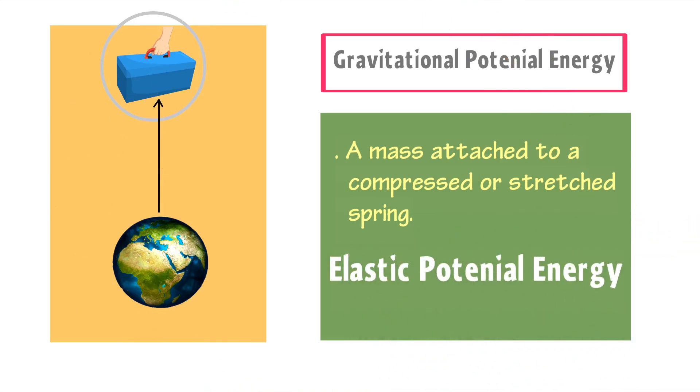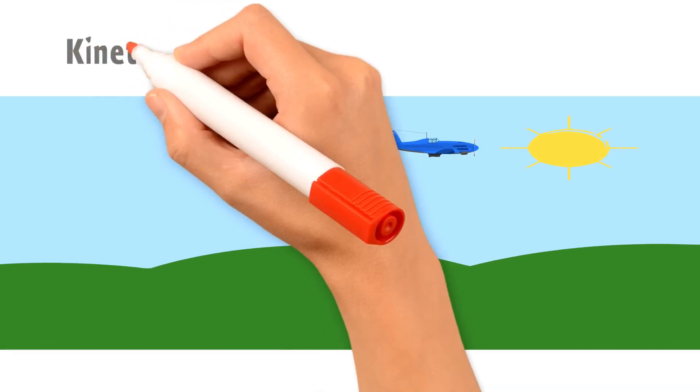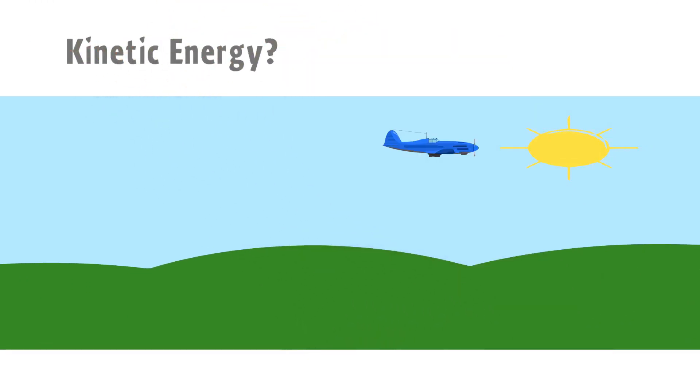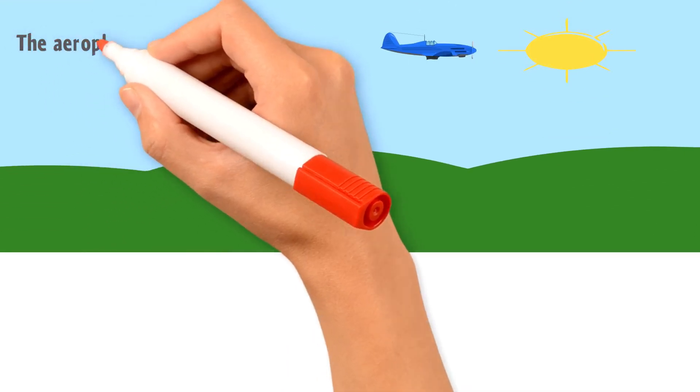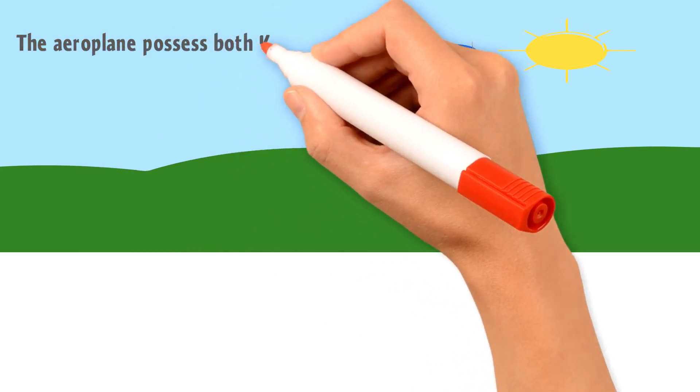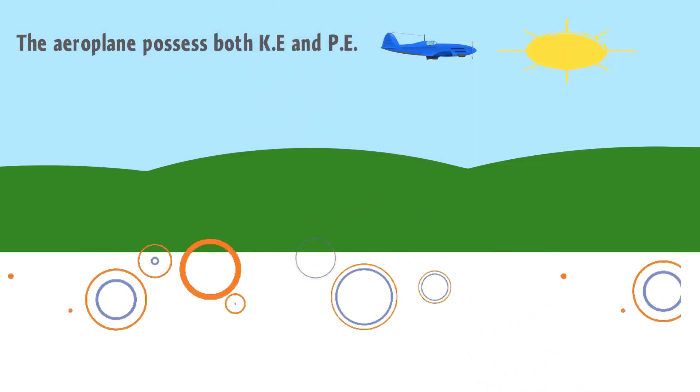Now, let me give you another example. If an aeroplane is moving above the earth's surface at a particular height, is this aeroplane possesses kinetic energy or potential energy? Well,